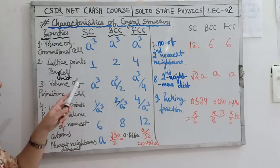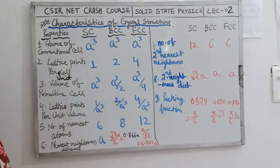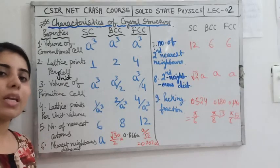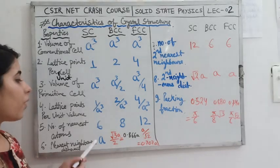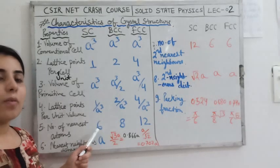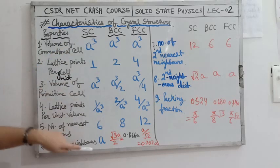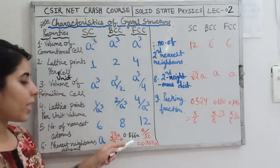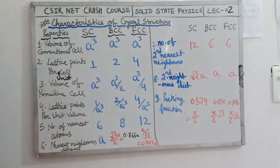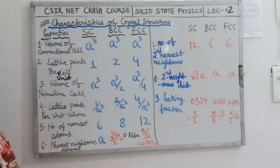The number of nearest atoms for simple cubic is 6, for body centered cubic is 8, and for face centered cubic is 12. These are the atoms situated very close to one particular atom in the lattice. The nearest neighbor distance for simple cubic is A, for body centered cubic it is (√3/2)A = 0.866A, and for face centered cubic it is A/√2 = 0.7071A.